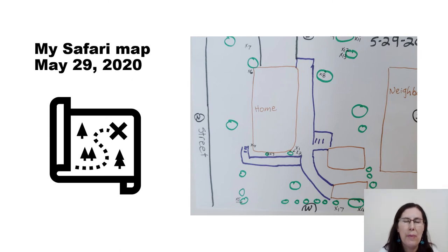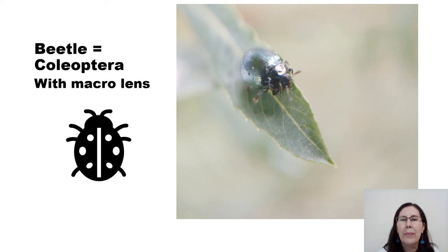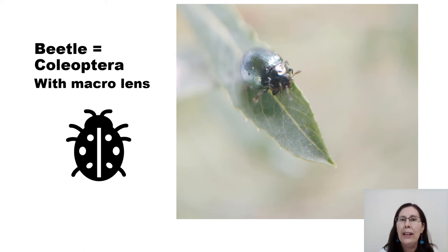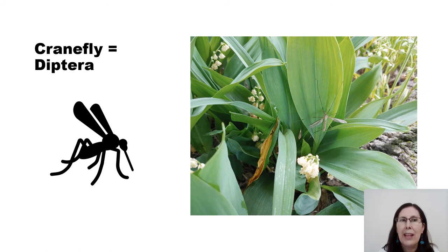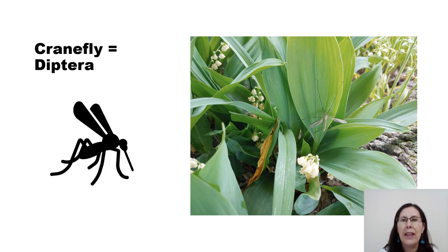Let me show you a couple of pictures from my safari. This is the only beetle that I could find that day. I found several specimens of the same beetle and it's a little tiny thing, no larger than my pinky fingernail. I used my macro lens on my cell phone to get an enlarged picture of this little tiny beetle on one of my bushes. Here's an example of a fly — this is a crane fly. They're really big and they're really slow, so they're great to take photos of because you can actually see them and they stand still. It might be really hard to get a picture of any kind of fly because they are so good at taking off as soon as you look at them.